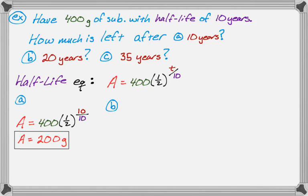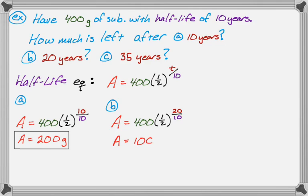For part B, it's A equals 400 times one-half to the 20 over 10. Since 20 over 10 is 2, and one-half squared is one-fourth, that gives A equals 100 grams — 400 times one-fourth is 100.